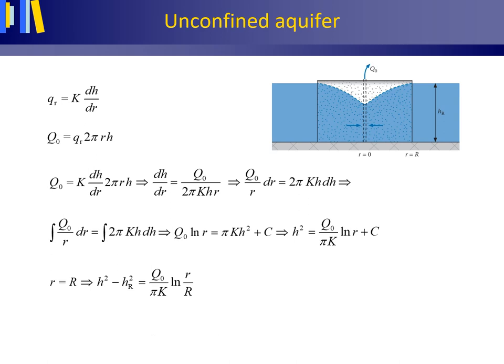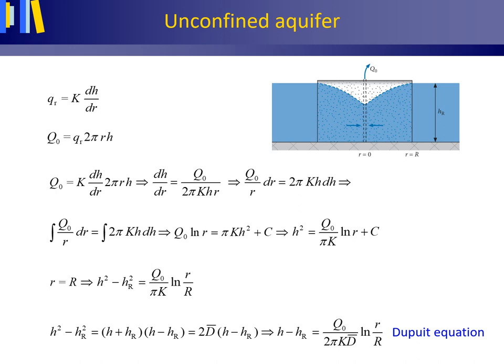For unconfined conditions where the absolute value of the drawdown |H − H_R| is much smaller than the hydraulic head H itself, we may rewrite the equation using the approximation that H plus H_R equals two times the average saturated thickness of the aquifer. The equation can then be rewritten in a form we recognize as the Dupuis equation for a confined aquifer, allowing us to complete table 3.3 and 3.4.